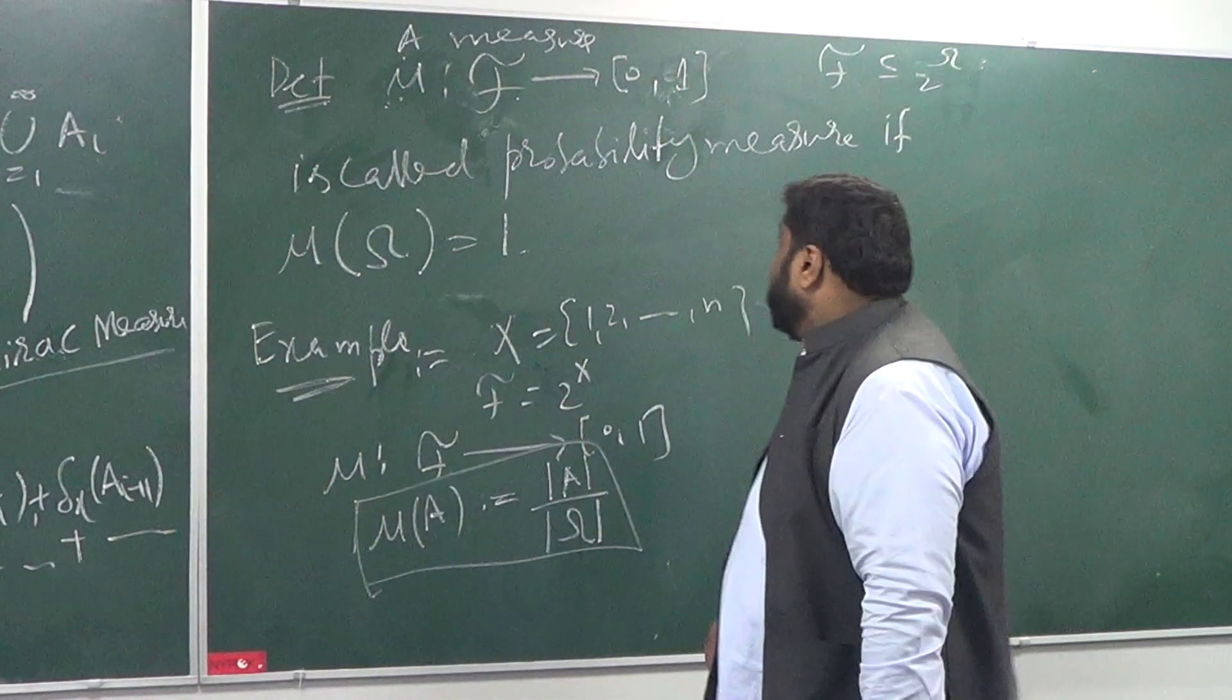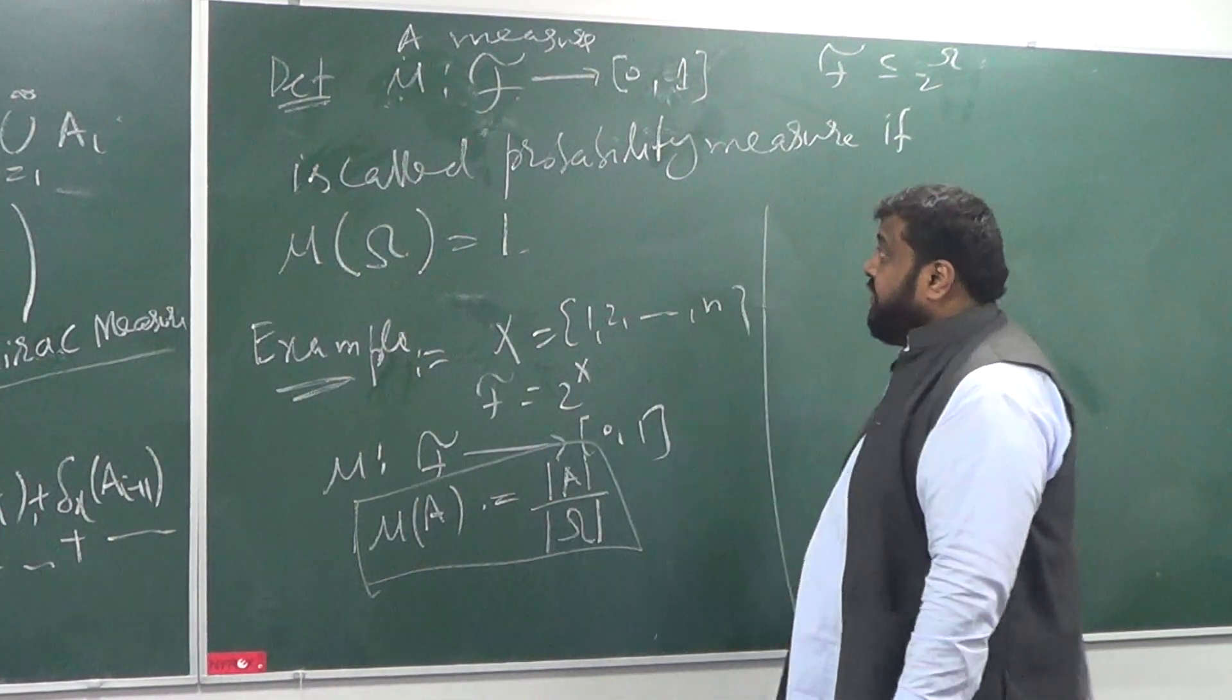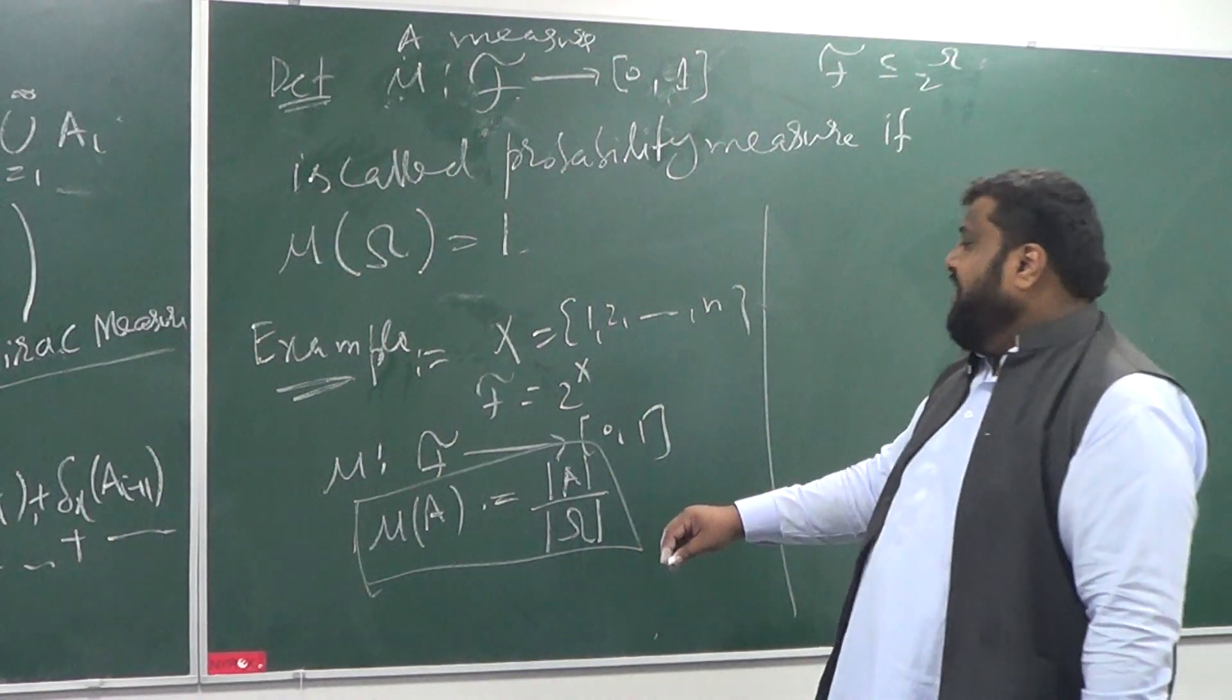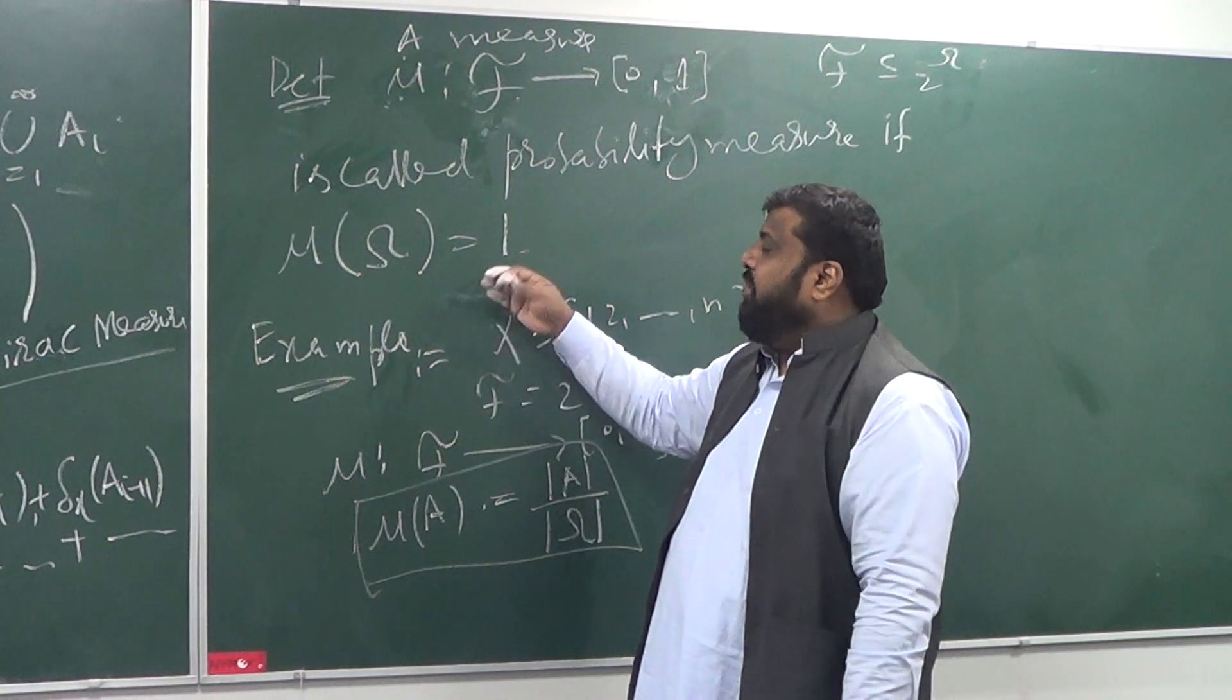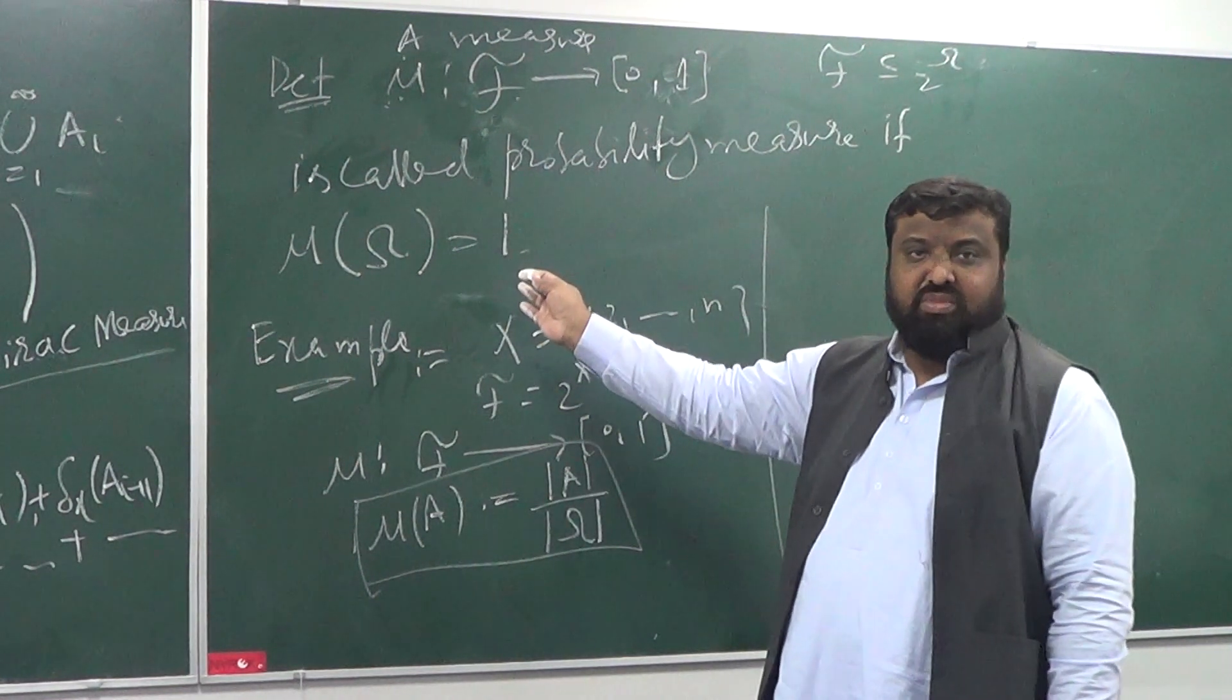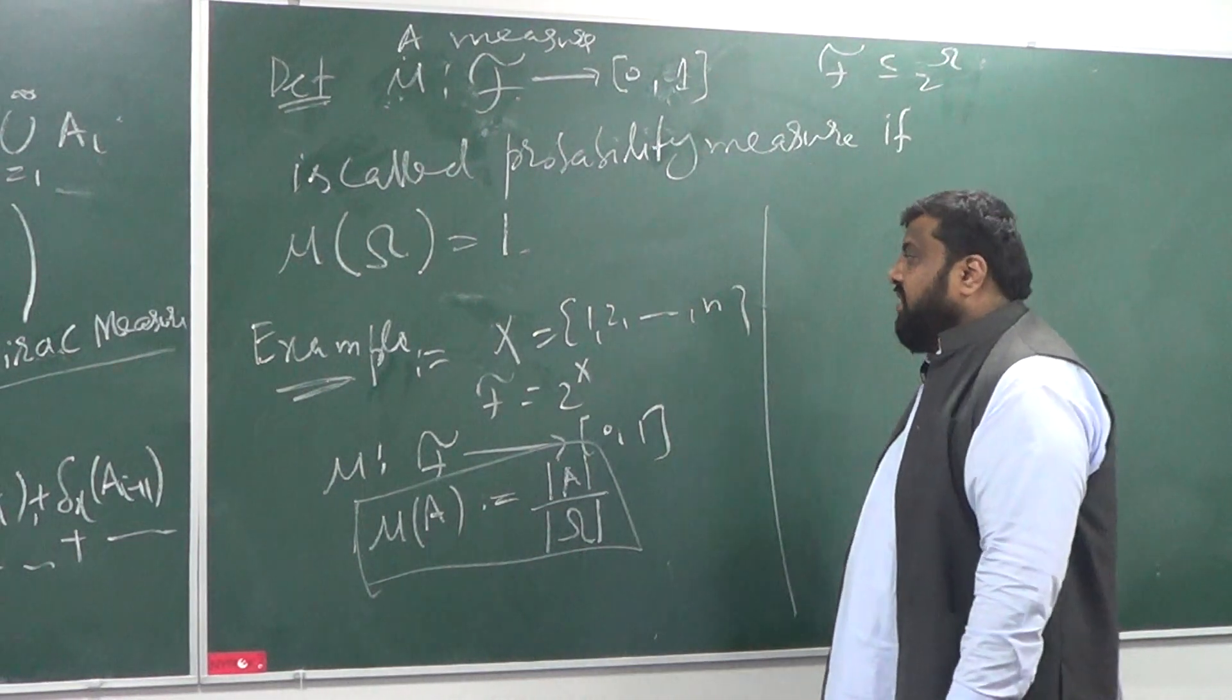Sir, I have a question about the definition. In the probability measure, you take mu of empty set equals 0, or mu of omega equals 1, actually. That's right, sir.